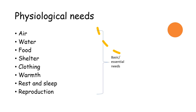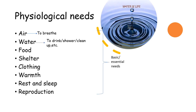Basic means essential. If these needs are not satisfied, the human body cannot function optimally. Air is obviously needed — otherwise we cannot breathe, and oxygen comes from the air around us. Next is water. Another name of water is life; we cannot live without water. We need water to drink, to take a shower, to do several daily activities. We need food to consume — nobody can survive without food.